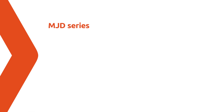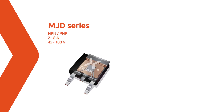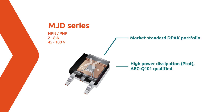To realize this circuit, we have used two of our MJD31CA, which are automotive qualified, high-power, 100-volt, 3A, NPN bipolar transistors. They come in the well-established DPAK package, which offers a high thermal power dissipation capability.